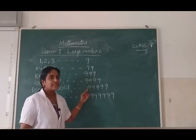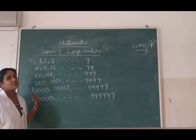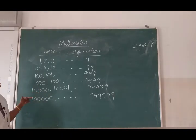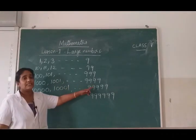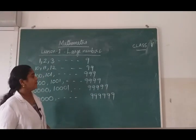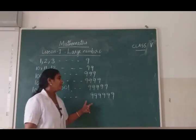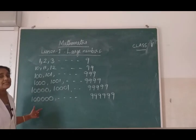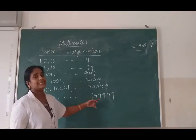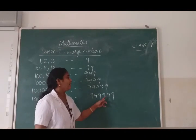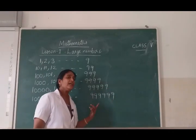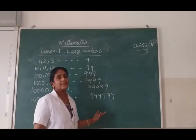Adding 1 to the greatest 4 digit number, what will you get? You will get the smallest 5 digit number. The smallest 5 digit number is 10000. The greatest 5 digit number is 99999. After the greatest 5 digit number, the next number is the smallest 6 digit number — that is 1 lakh. The greatest 6 digit number is 9 lakh 99999. Adding 1 to the greatest 6 digit number gives you the smallest 7 digit number. Like that you can write large numbers.